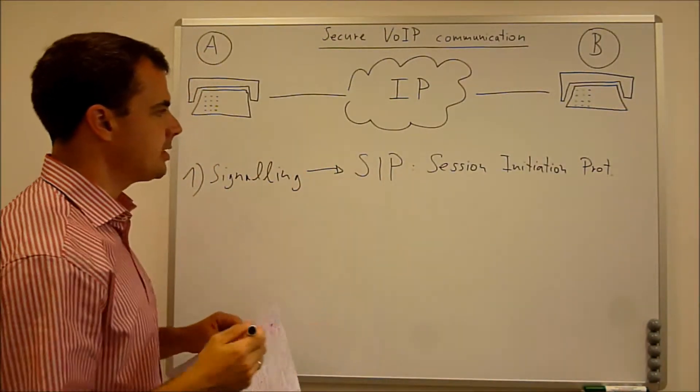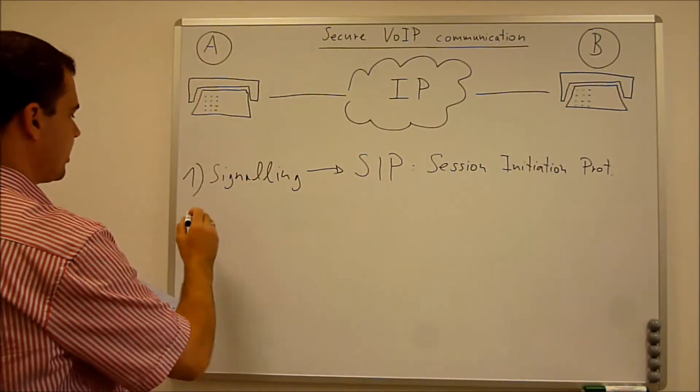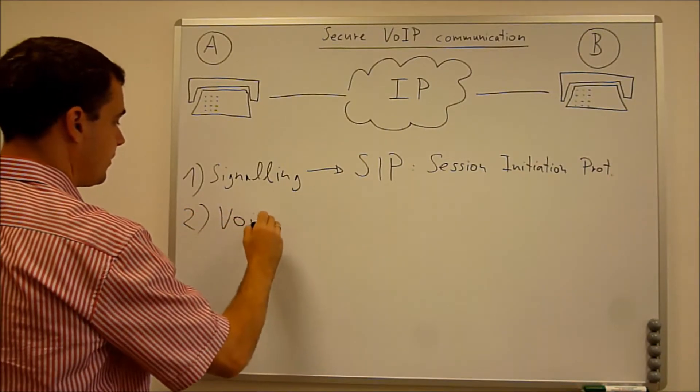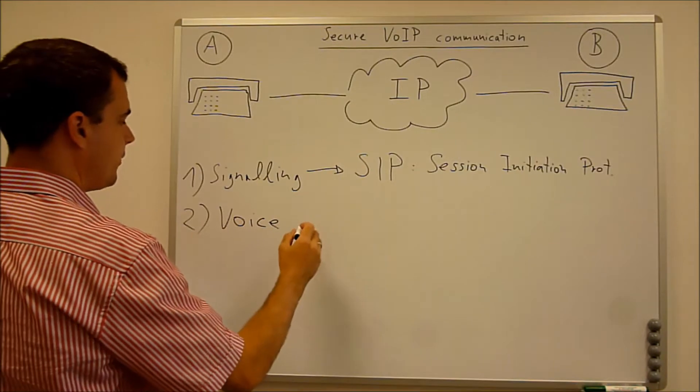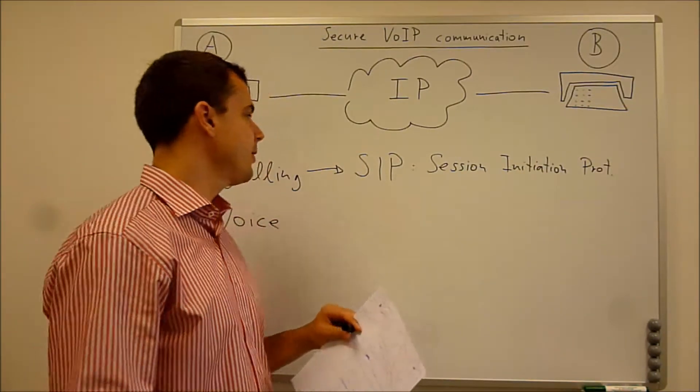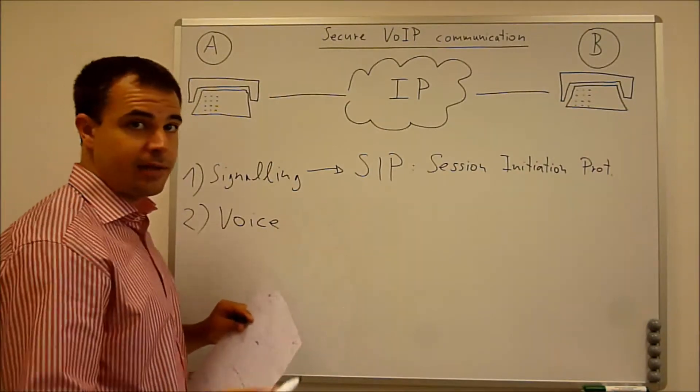After signaling is done, that comes to the second item. That is voice. Because the requirement for transmitting voice data is different from the signaling. So that is why this is separated.